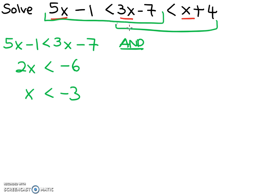because it must satisfy the left-hand side and the right-hand side. So the other inequality is 3x minus 7 less than x plus 4,